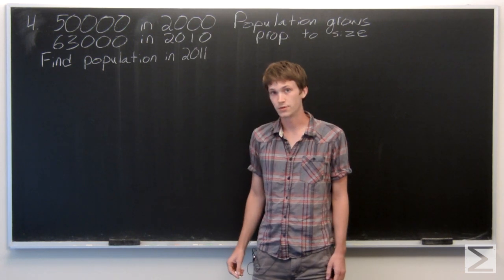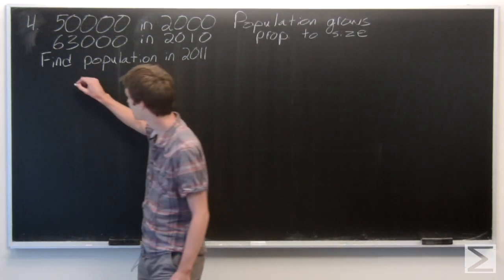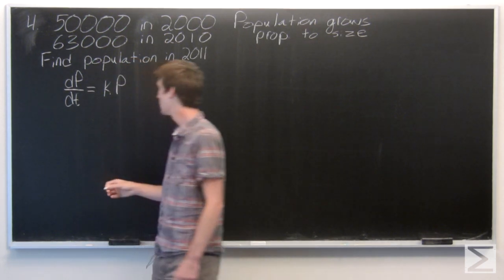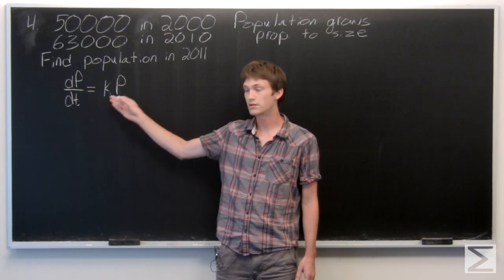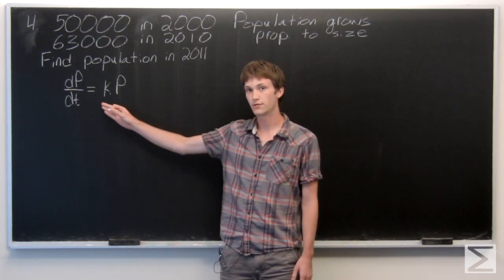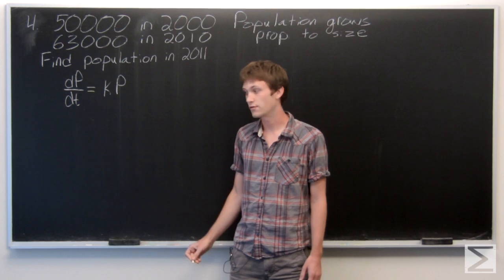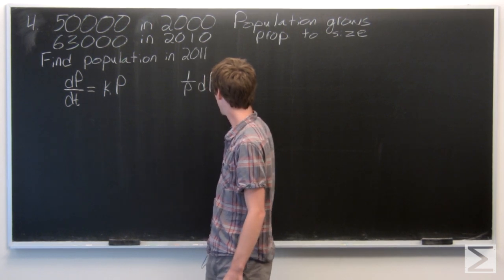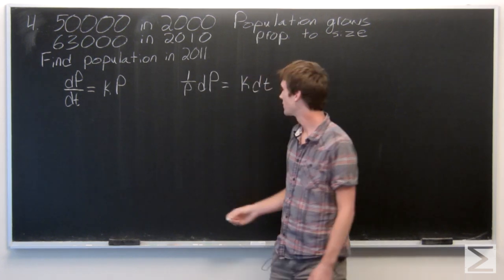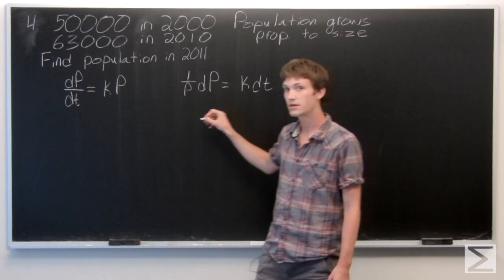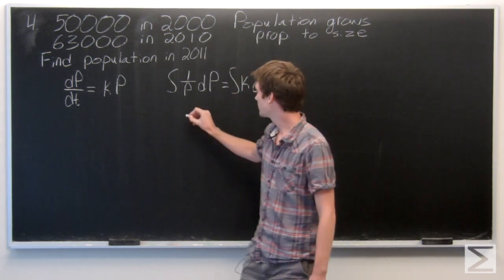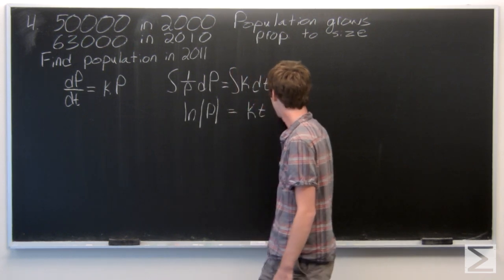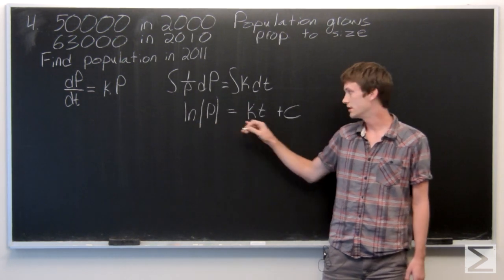Knowing that the population grows proportional to its size, we can write the following differential equation — that the population grows with some proportional constant k times the population. We can separate the variables and anti-differentiate to determine the population. We find that the natural log of p is equal to kt plus c.